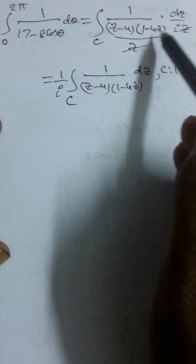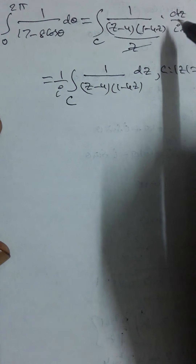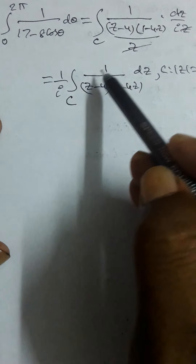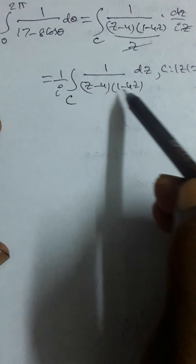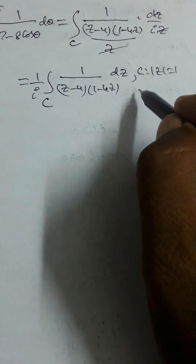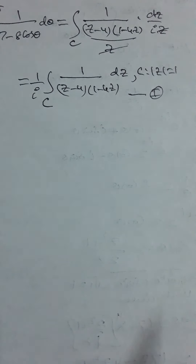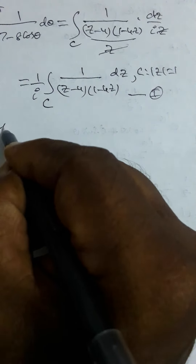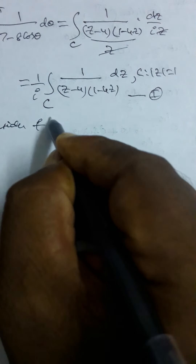Substituting these values into the integral from 0 to 2π, we get the integral over C of 1/[(z − 4)(1 − 4z)/z] · dz/(iz), and z cancels, giving (1/i) times the integral over C of 1/[(z − 4)(1 − 4z)] dz, where C is the unit circle |z| = 1. Call this equation (1).